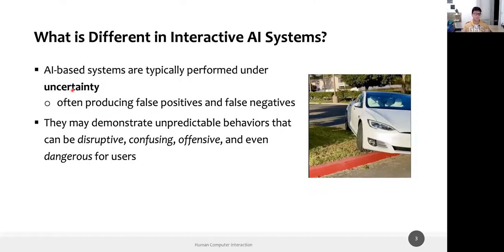This uncertainty is typical of AI systems and can bring unpredictable behavior. It can be confusing, like in the spam email example, but also disruptive or dangerous. For example, there was a Tesla car using the smart summon system — where the car should drive from a parking slot to the waiting driver. For some unknown reason, the car thought the grass was the street, turned too early, and got stuck on the grass. This unexpected behavior doesn't match the user's mental model or the advertised features.